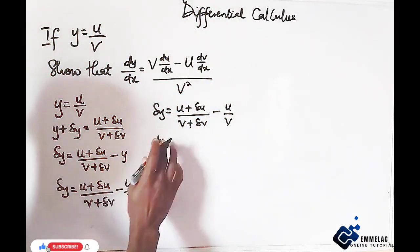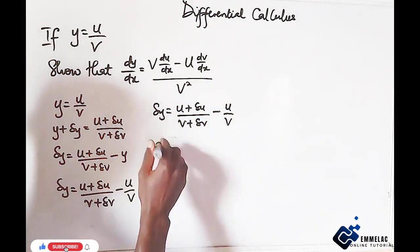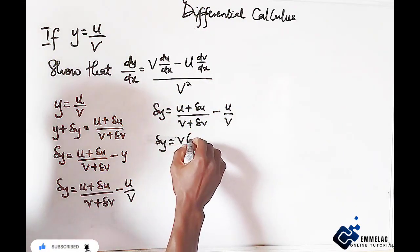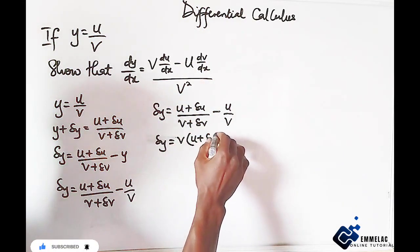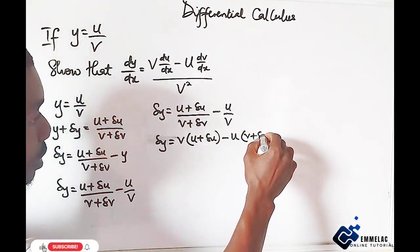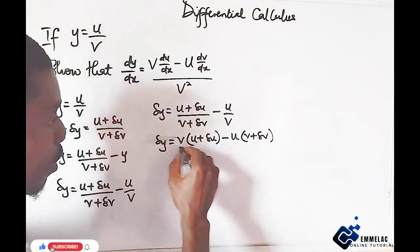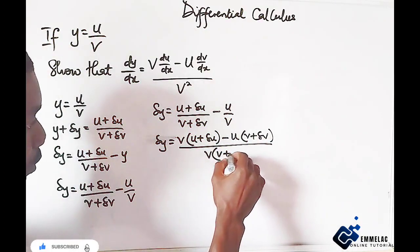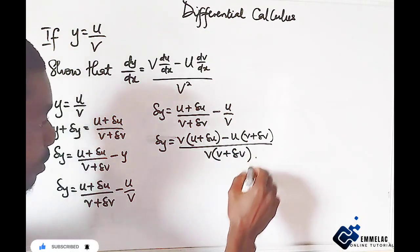Here you have change in y equals v into u plus change in u then minus u into v plus change in v all over v into v plus change in v.